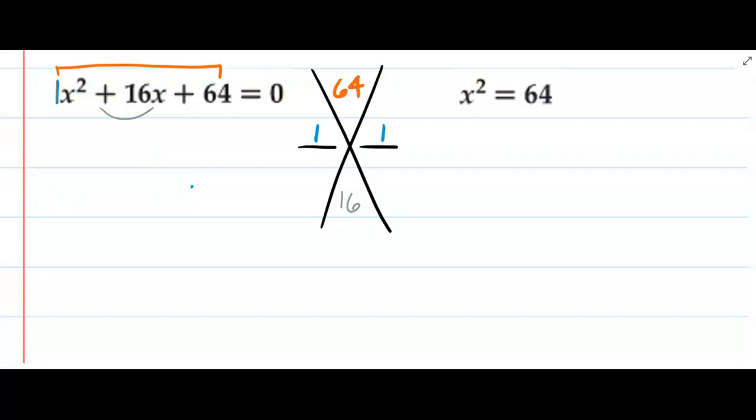So we're trying to come up with factors of 64 that combine to give us 16. So 1 and 64, 2 and 32, 3 doesn't work, 4 and 16, 5 doesn't work, 6 doesn't work, 7 doesn't work, 8 times 8, and there are all the factors.